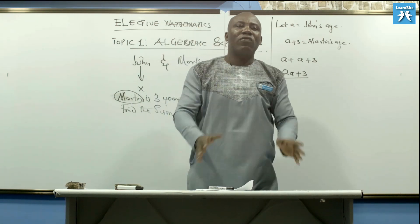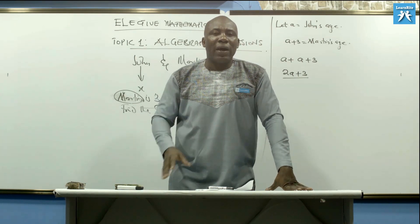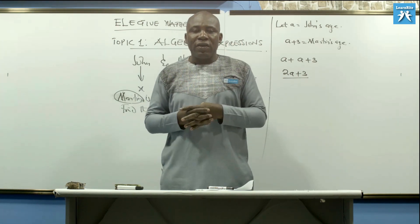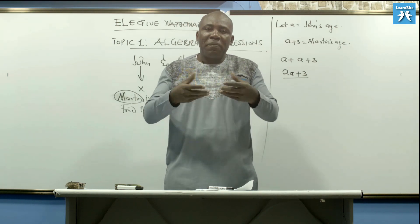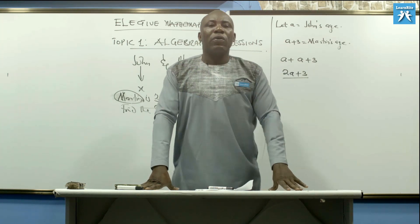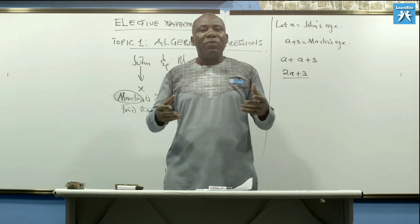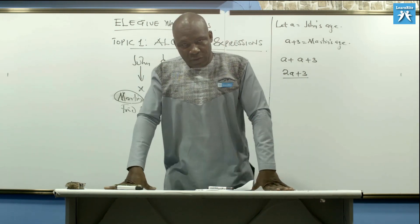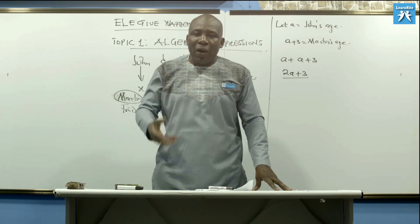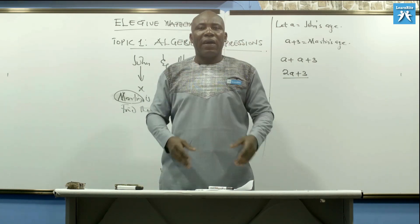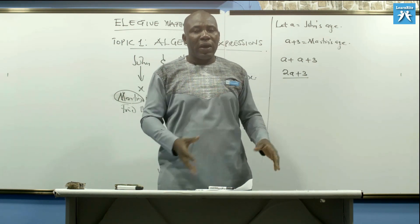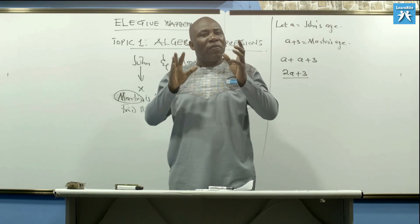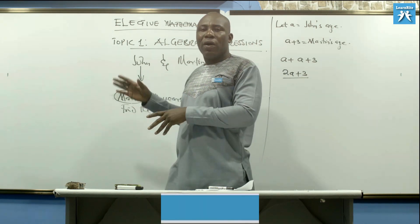In learning algebraic expressions, there are some things you need to know. First, you need to know how to add variables — that is, how to simplify basic algebraic expressions, which you learned in JHS. Second, you need to know how to multiply, both for numbers and variables — for example, two times three is six. Third, you need to have an idea about powers of numbers. Fourth, you need to have some idea about distributive property. These are some of the things you need to be comfortable doing algebraic expressions.